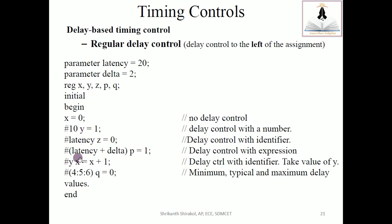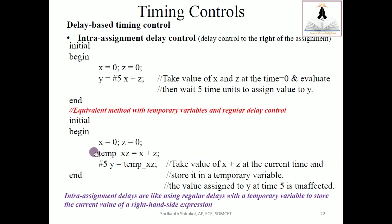At 52 time units, y is an identifier with value 1. So 52 plus y (which is 1) gives 53 — at 53 time units x will be incremented. Then for the min-typical-max expression (4, 5, or 6), the Xilinx simulator chooses the typical value by default. So 53 plus 5 equals 58 — at 58 time units q will be assigned with 0. This concludes the regular delay control initial block analysis.